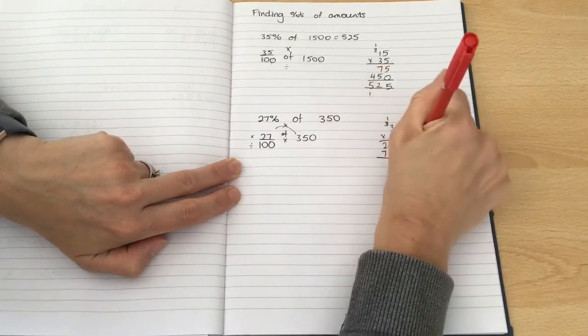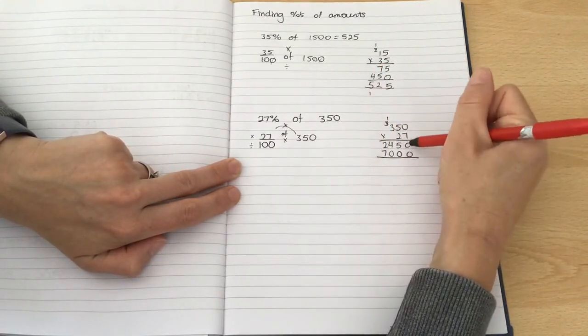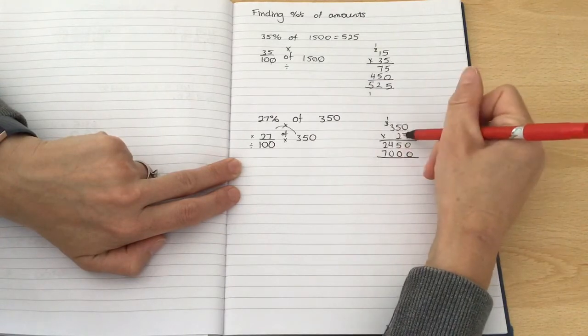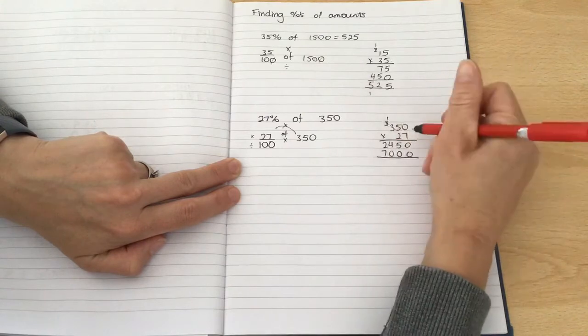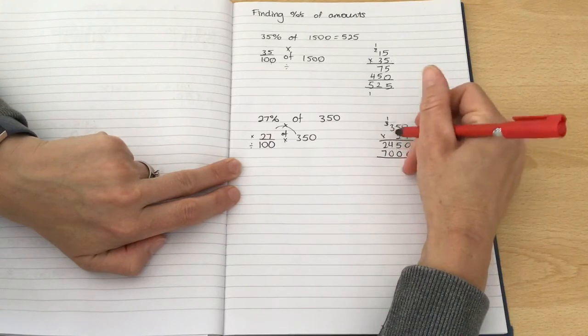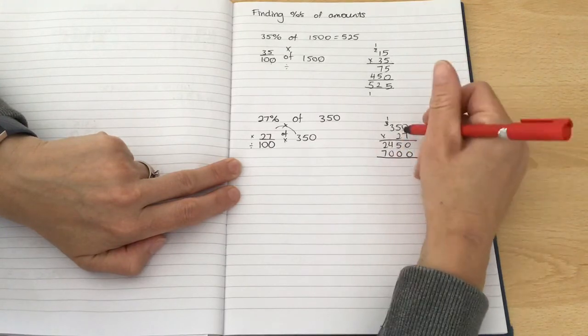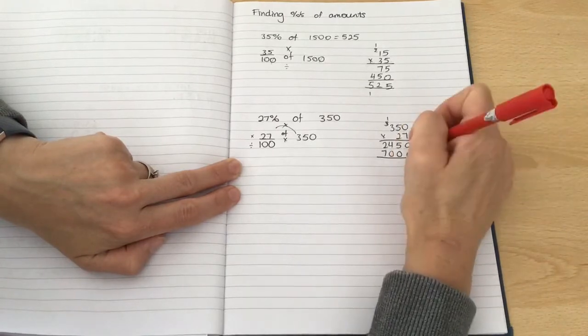I'm just going to double check that because my class know I tend to always make mistakes. It's always good to double check. 7 times 0. 7 times 5 is 35. 7 times 3 is 21. Add the 3 is 24. 0 goes down. 2 times 0 is 0. 2 times 5 is 10. Carry across. 2 times 3 is 6. Add the 1 is 7. Perfect. I'm happy with that. I've checked it twice.